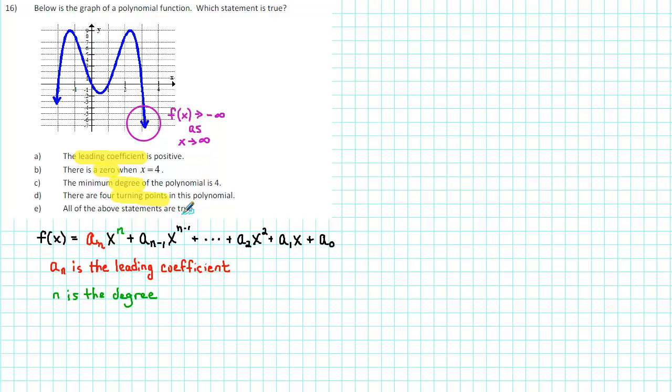Now as x goes to infinity, all these smaller powers of x are going to become relatively small, and it's going to be the leading term that dominates. So all we need to do is investigate what happens to the leading term as x goes to infinity.